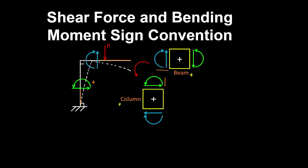And in frames the beams are rigidly connected to the columns. So before and after deformation, the beam and column remain at 90 degrees at the joint.